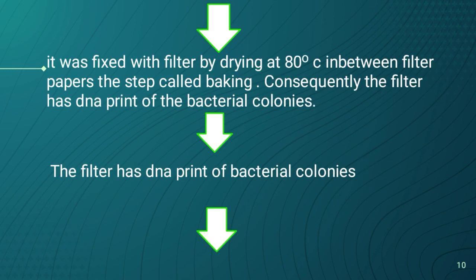The DNA is fixed onto the filter by drying at 80 degrees Celsius between filter papers. This step is called baking. Consequently, the DNA from bacterial colonies is imprinted on the filter, giving the filter a DNA print of the bacterial colonies.